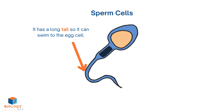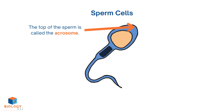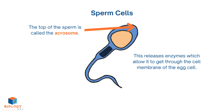It has a long tail so it can swim to the egg cell. The middle area of the sperm cell contains a lot of mitochondria for releasing energy needed for movement. The top of the sperm is called the acrosome. This releases enzymes which allow it to get through the cell membrane of the egg cell.